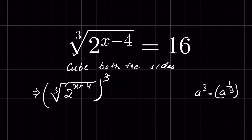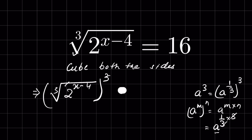When we cube it, it is raised to the power of 3. Using the property that a raised to the power m, whole raised to the power n, equals a raised to the power m times n — this becomes a raised to the power 1 upon 3 times 3, and the 3s cancel. So we remove the cube root. The right hand side becomes 16 cubed.